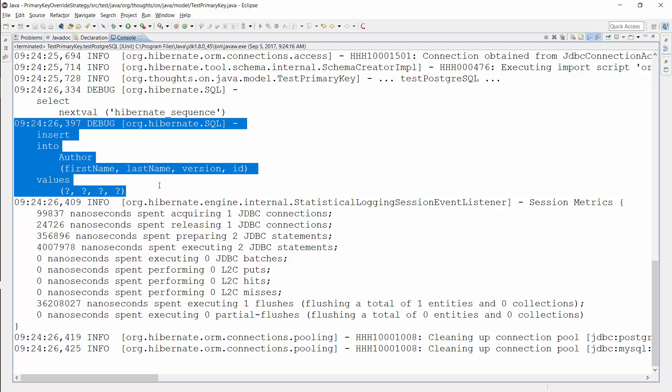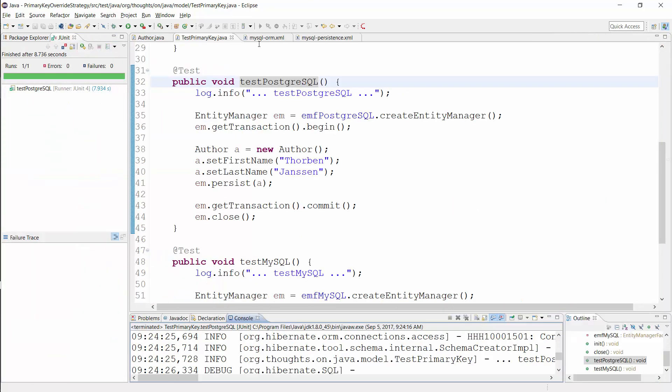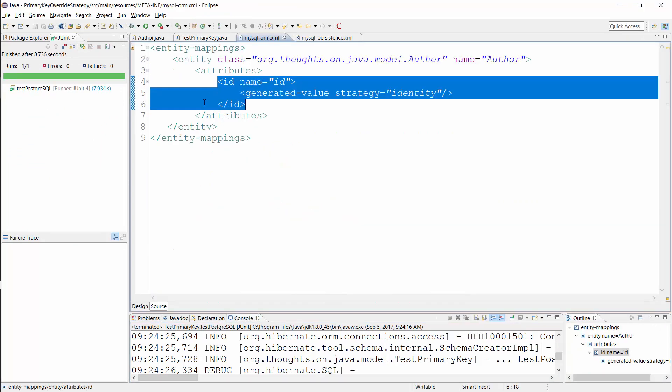But as I said in the beginning, MySQL doesn't support sequences. So let's define a mapping file which overwrites the mapping strategy. By default, JPA and Hibernate check if an orm.xml file exists in the meta-inf directory and use it to override the mappings defined by the annotations. So you just need to provide the mappings you want to change. In this case, it's only the generation strategy for the ID attribute of the Author entity.